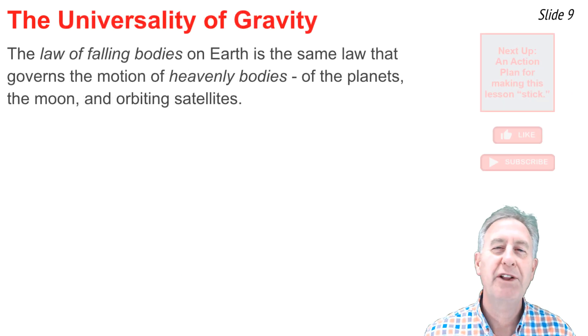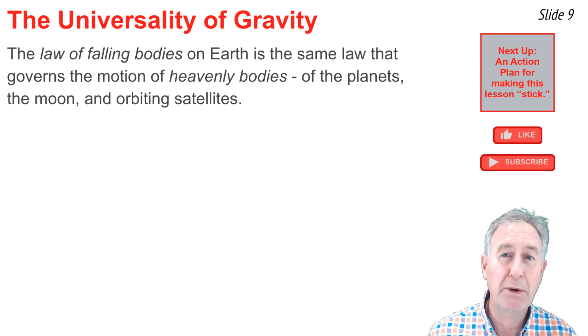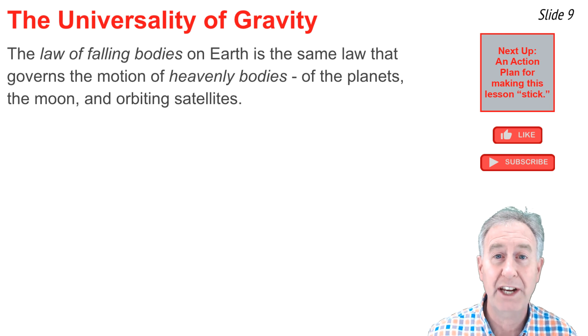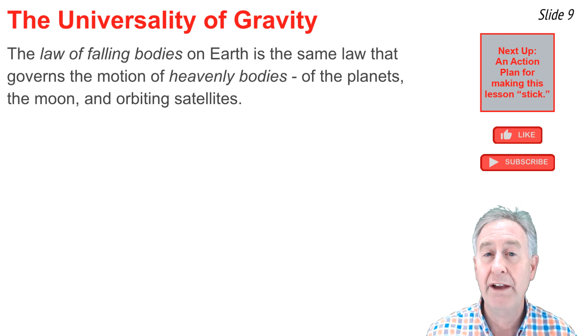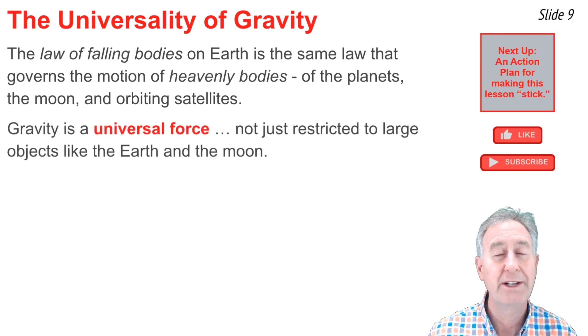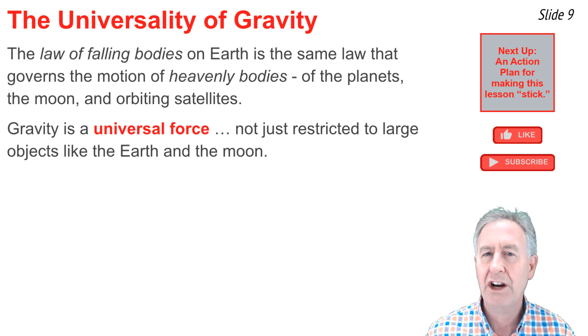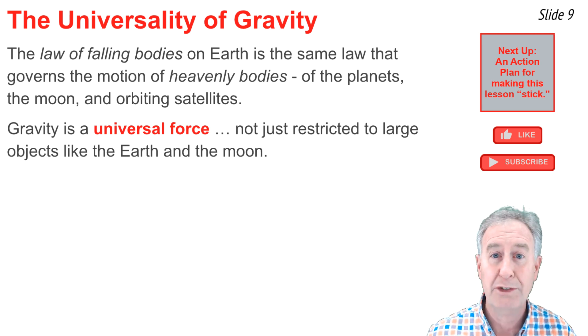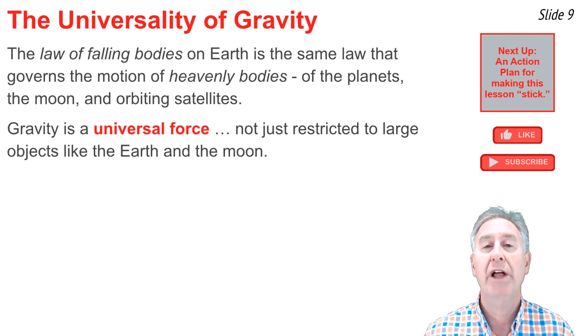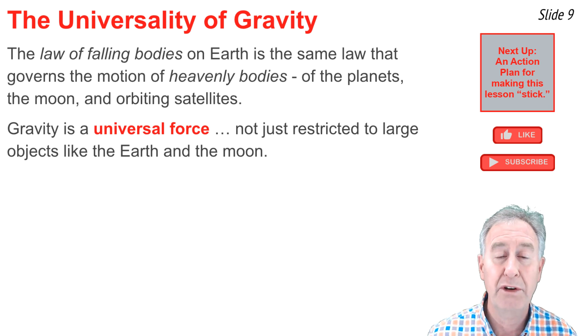The law of falling bodies on earth is the same law that governs the motion of heavenly bodies such as the planets, the moon, and orbiting satellites. It's the law of gravity as a universal force, no longer restricted to large mass objects like the earth acting upon small objects that are on or near its surface, but instead applying to all objects throughout the universe.